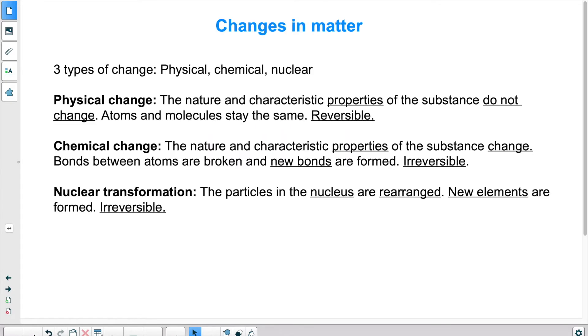Before we talk about chemical changes, we're going to talk about the different types of changes in matter. So there are three types that exist. You see them here: physical, chemical, and nuclear.